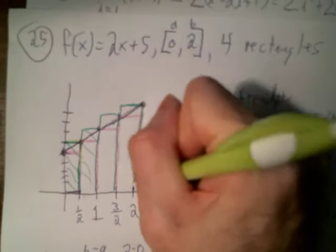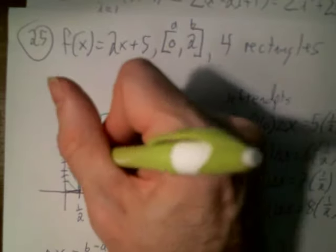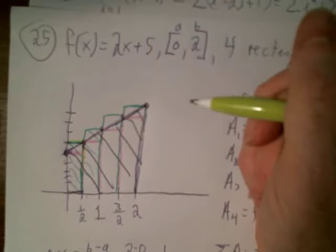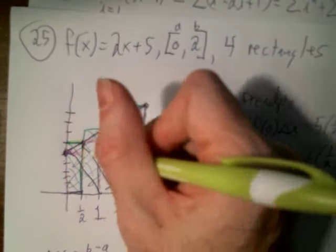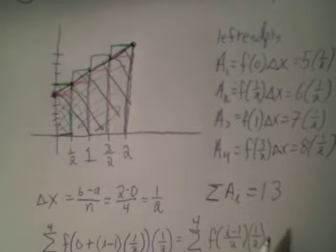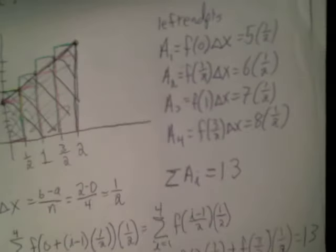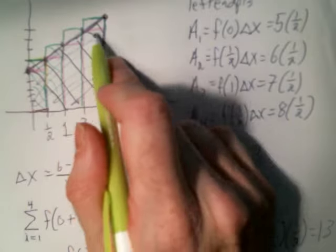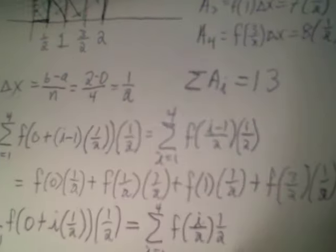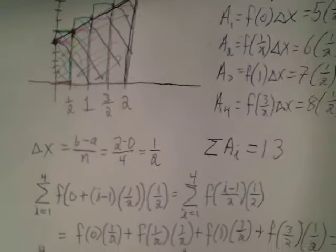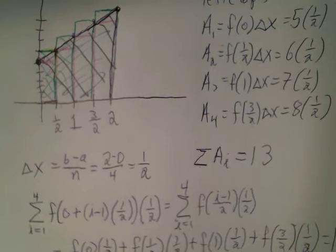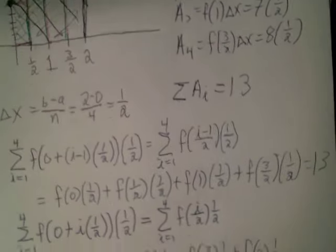We're trying to find the area underneath the diagonal curve. The left-endpoint sum (13) is a lower approximation and the right-endpoint sum (15) is an upper approximation. The actual area lies between these two — that's the heart of this approach: identifying an upper sum and a lower sum so the true area is sandwiched in between.